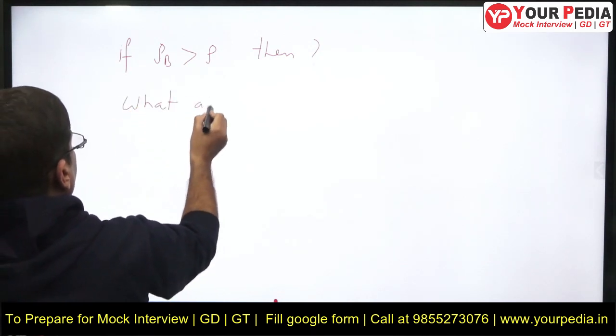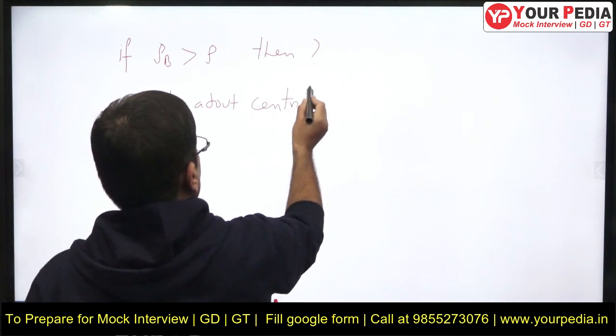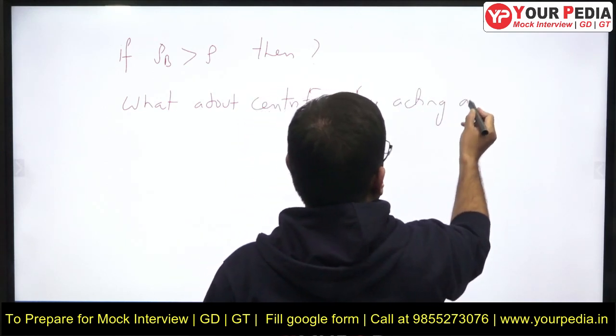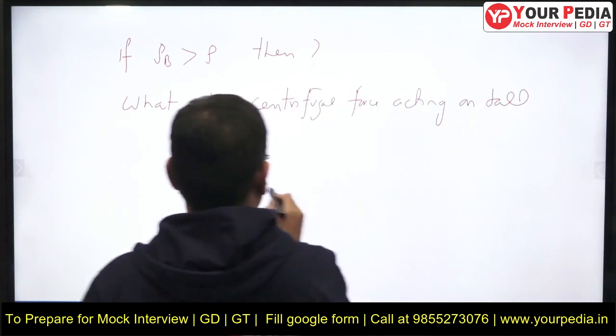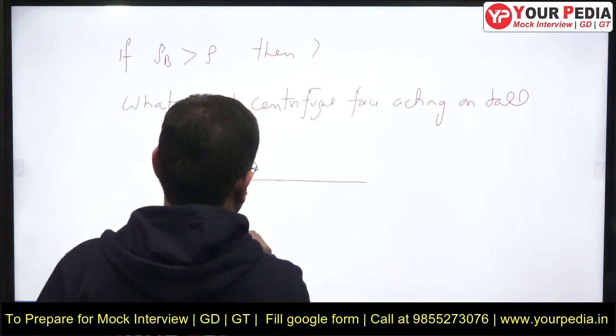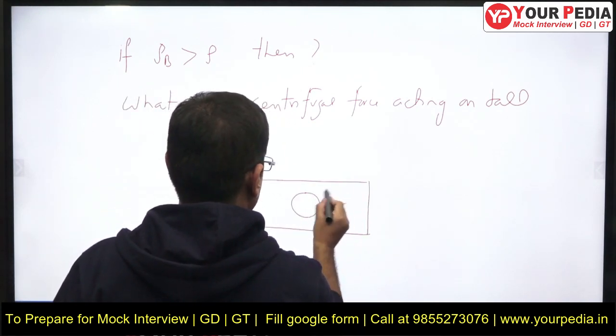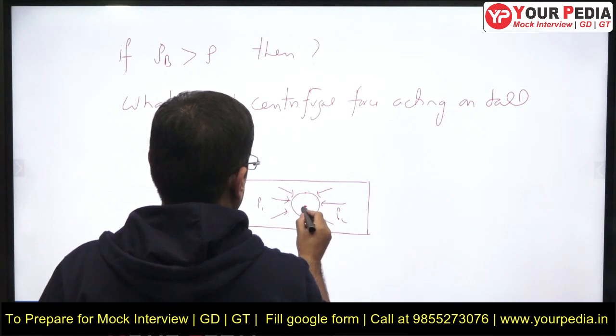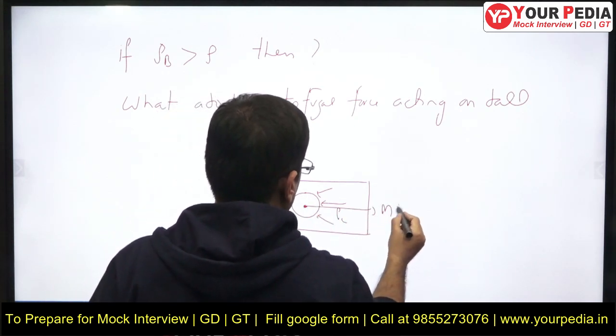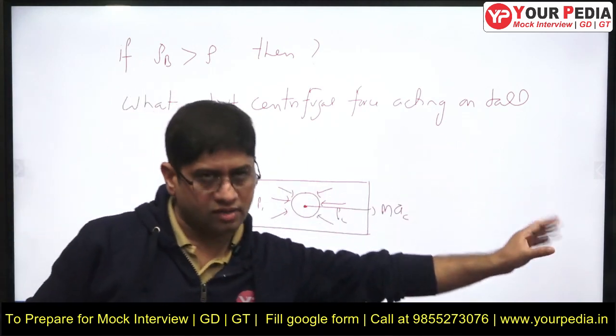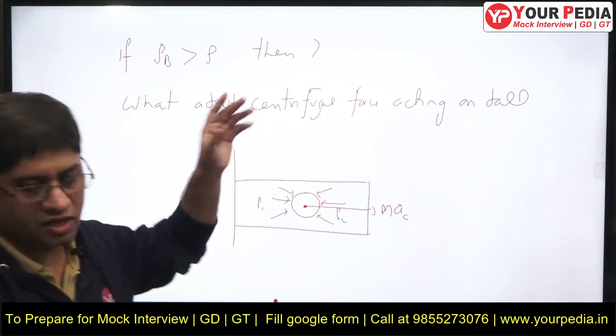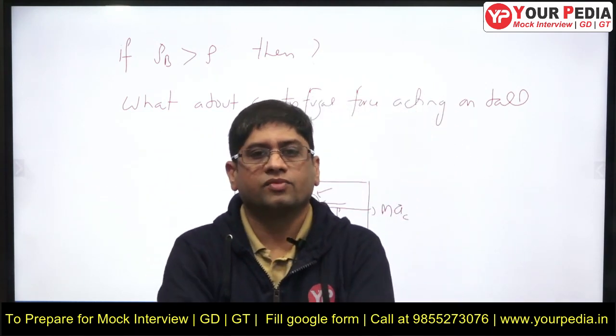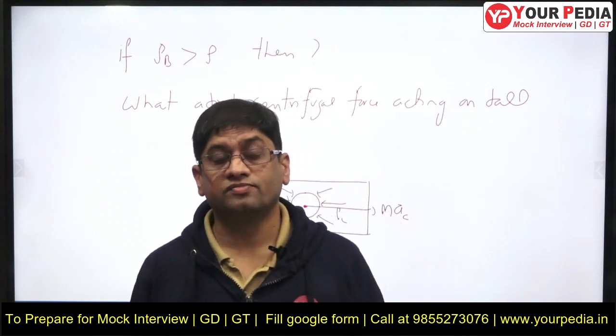Second question: what about centrifugal force acting on the ball? That means when I am giving you this ball, I only gave you pressure acting on the ball - something like P2 and P1. I did not talk about centrifugal force - mass of the ball into acceleration of the ball. Why did you not consider it? Think of these two questions and try to type answers in the comment section. Let's see what answer you give. All the best, thank you.